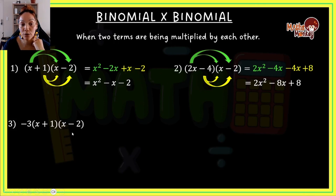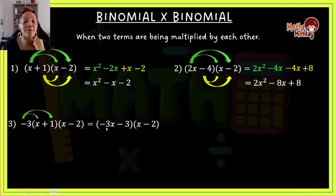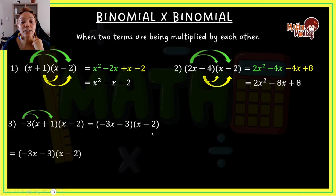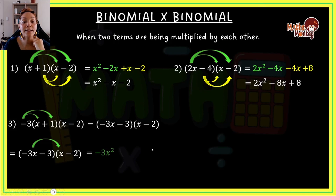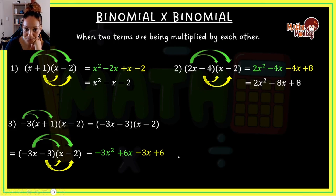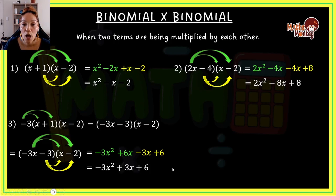In this example there's a number in front of the binomials. First multiply the negative 3 into one of the brackets: negative 3 times x gives negative 3x, and negative 3 times positive 1 gives negative 3. Now I have a binomial times a binomial and I apply the arrow rules. First arrow: negative 3x squared. Second arrow: positive 6x. Third arrow: negative 3x. Then negative 3 times negative 2 gives positive 6. The middle terms 6x minus 3x simplify to 3x. Final answer: negative 3x squared plus 3x plus 6.